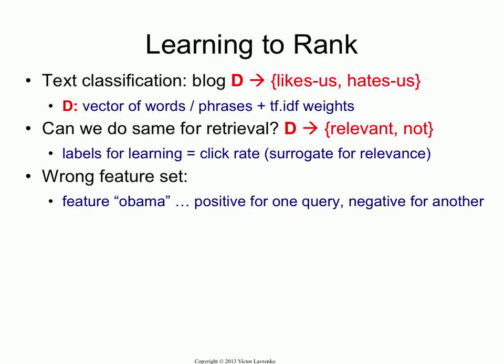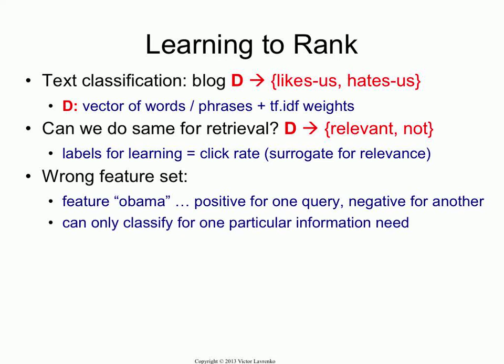The reason for that is when you're predicting a small number of classes, some features will bear positive weights, some features will bear negative weights. So if you're detecting sentiment, some words indicate that they love us, some words indicate that they hate us, and you're just learning an optimal combination of those words. But when you're doing retrieval, different words are positive and negative for different queries. You don't have a fixed set of classes. In retrieval, you have an infinite number of queries, and each query has its own definition of what's relevant and what's non-relevant. So something like "Obama" would be an indicator of relevance for one query, but it would indicate non-relevance for another query.